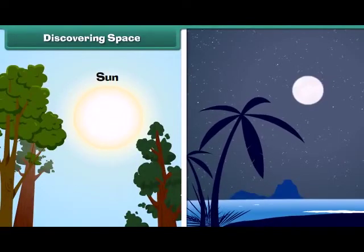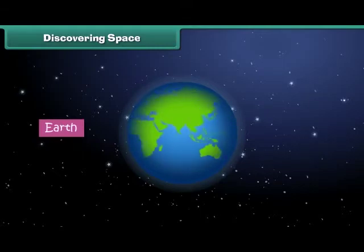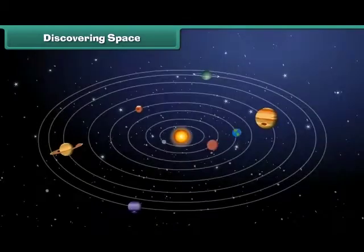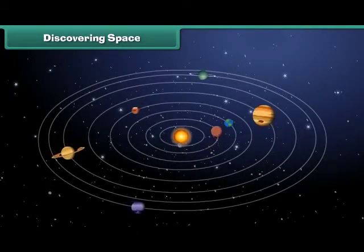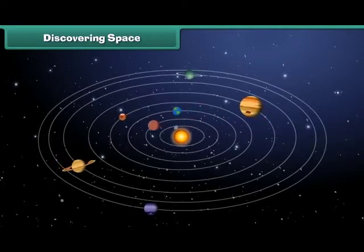The Sun, Moon and the stars that we see in the sky are all located in space. The Earth on which we live is also in space. Everything from the small dust particle to the large planet is placed in space.